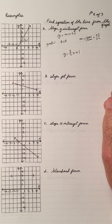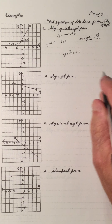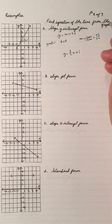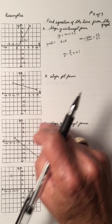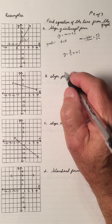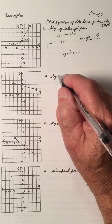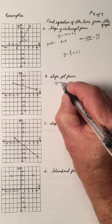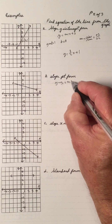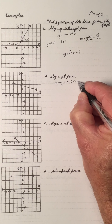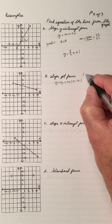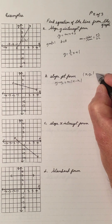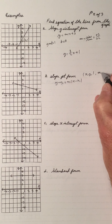I'm doing the slope from looking at the graph. I could do y2 minus y1, write down both ordered pairs and work it out. But I'm going to use it from the graph because it's easier to see. So the point slope form is y minus y1 equals m times x minus x1, where we have a point x1, y1 and the slope is m.